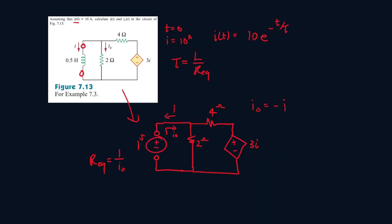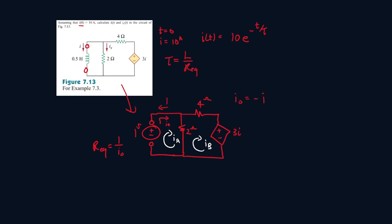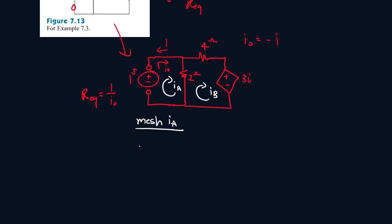Let's do a mesh to solve this. Let's call this IA and let's call this IB. So for mesh IA, it will be minus 1 plus 2IA minus IB, and that's 2IA minus 2IB. So that's the first equation done.